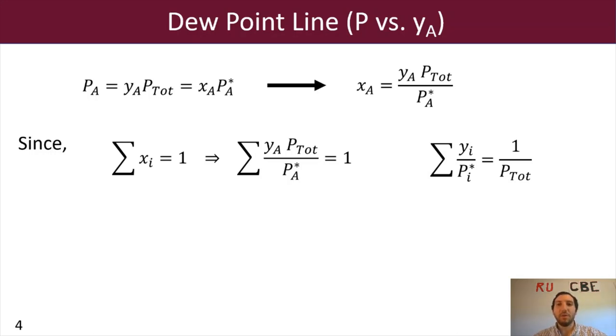And now, for an ideal binary system, we're going to now change that equation so that it's YA over PA star plus YB over PB star equals 1 over P total.